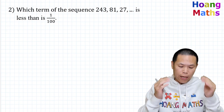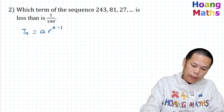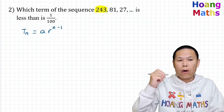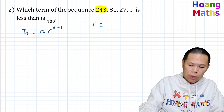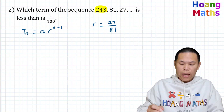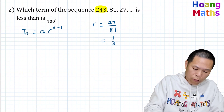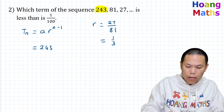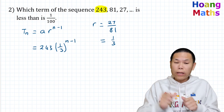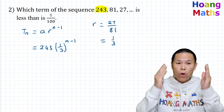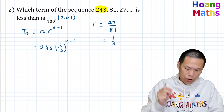To solve this, first we need to work out the general rule for this sequence. The general rule is t(n) = a × r^(n−1). We know a is 243. We need to work out r: using term three over term two gives 81, and simplifying that gives one third. So the common ratio is 1/3. We want the first term that is less than 1/100, or 0.01.